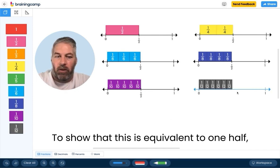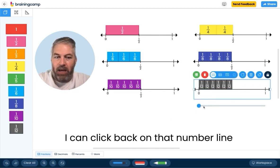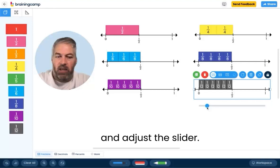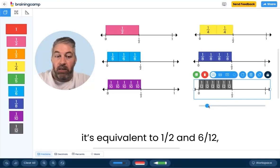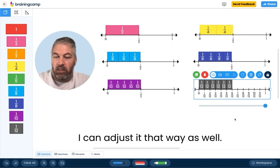To show that this is equivalent to one half, I can click back on that number line and adjust the slider. If I wanted to show that it's equivalent to one half and six twelfths, I can adjust it that way as well.